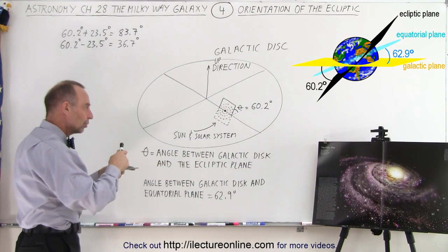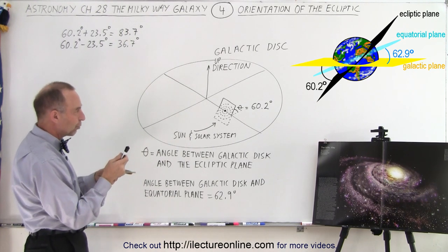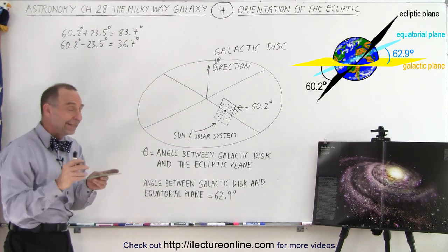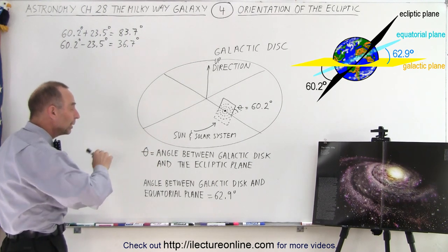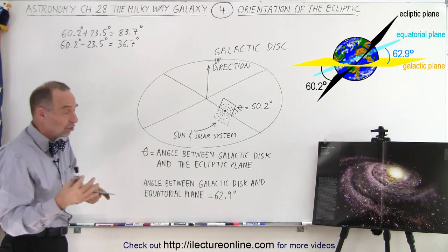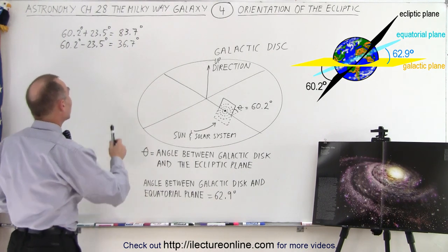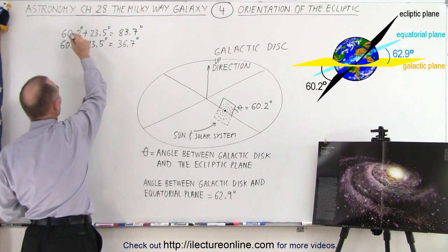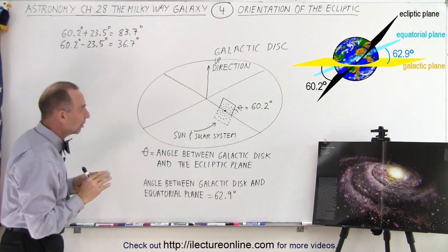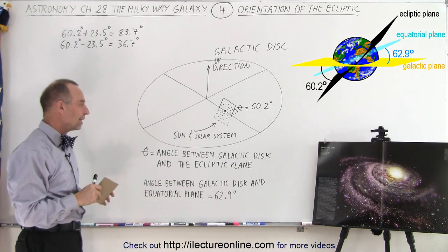Remember that 60.2 degrees is the angle between the galactic disk and the ecliptic plane. If we add or subtract 23.5 degrees from that, that would be the range in which the equatorial plane could be, and it's going to change continuously over a period of 26,000 years. Currently we're at 62.9 degrees, so we're just slightly more than 60.2 degrees.